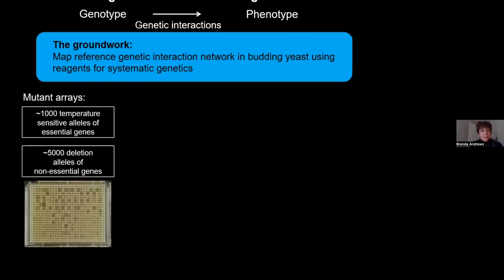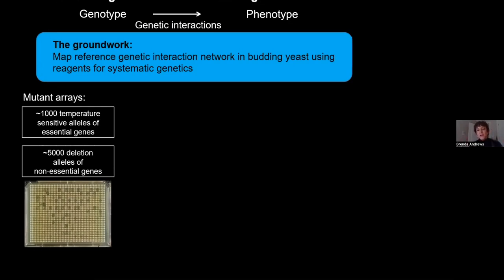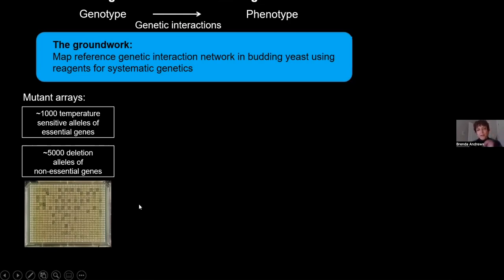The most important reagents relevant to this talk are shown on the left: mutant arrays that allow us to scrutinize the phenotypes associated with any single genetic perturbation in budding yeast. This is derived from a project where a consortium of yeast labs got together and individually deleted each yeast gene, replacing it with an antibiotic resistance marker. They discovered that you could delete any one of 5,000 genes in the yeast genome and the cells would still survive. We call this the non-essential gene set, and we have an array of 5,000 deletion mutant alleles.